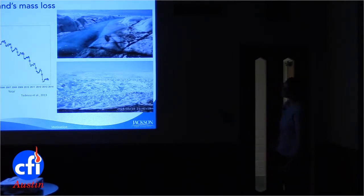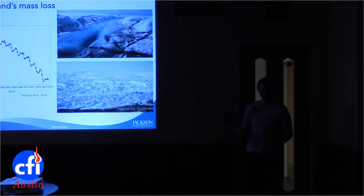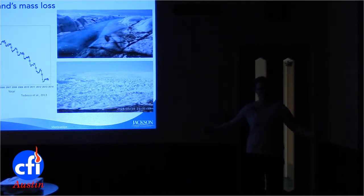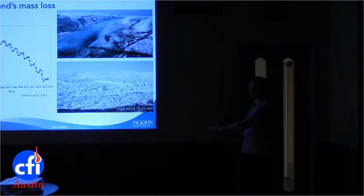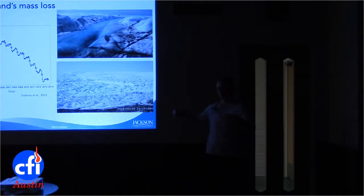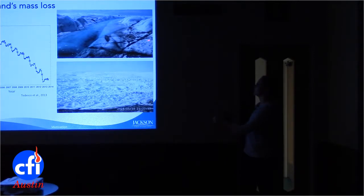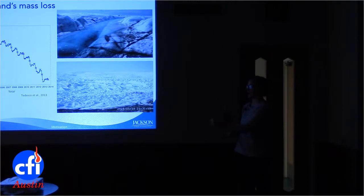Those lines visible in the upper photo are healed crevasses. When ice goes over a large bump on the bed, you get extensional forces essentially pulling the ice apart, forming crevasses. As that ice moves beyond that ridge, you have more compressive forces and the crevasses heal. You can also see all of that black cryoconite mentioned earlier.